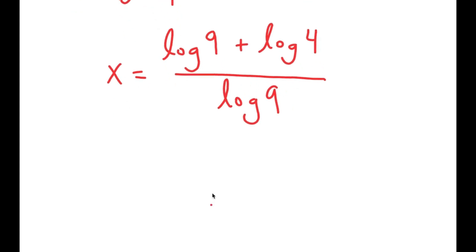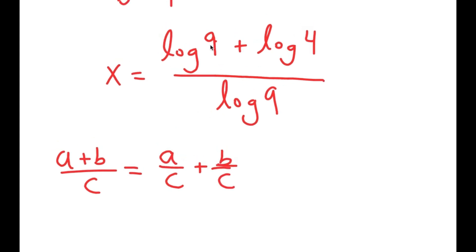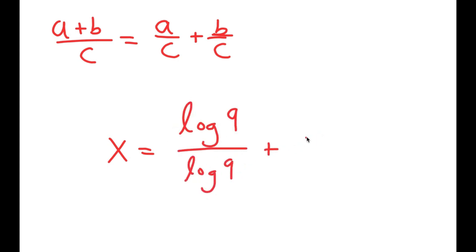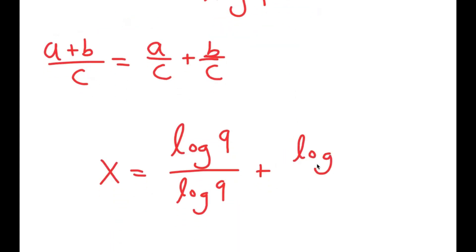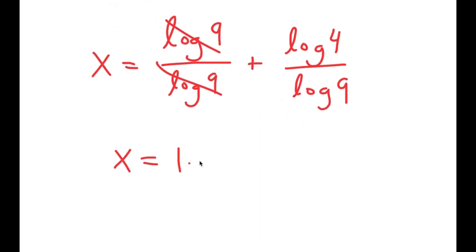If I have something in the form a plus b over c, this equals a over c plus b over c — that's just a fraction property. So I have log 9 plus log 4 over log 9, which I rewrite as log 9 over log 9 plus log 4 over log 9. Anything over itself equals 1, so log 9 and log 9 cancel out, and I get 1 plus log 4 over log 9.